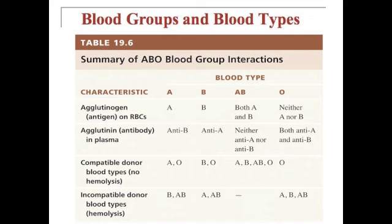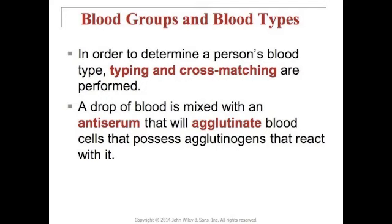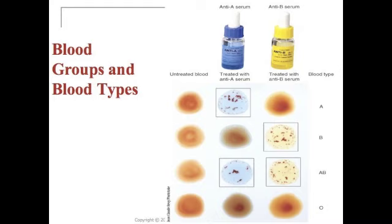To determine a person's blood type, typing and cross matching are performed. A drop of blood is mixed with an antiserum that will agglutinate blood cells possessing agglutinogens that react with it. Figure 19.16 on page 721 shows the procedure for ABO blood typing, where blood is mixed with antiserum A and antiserum B.